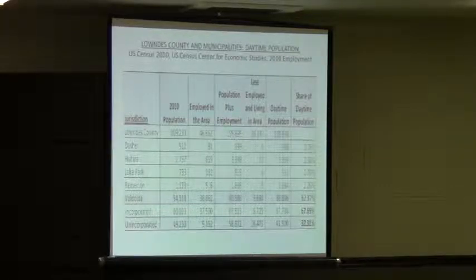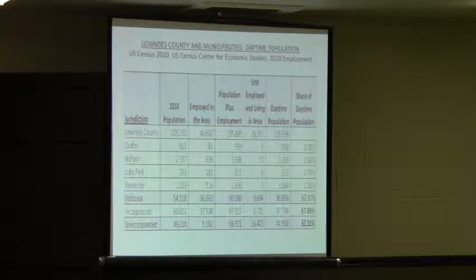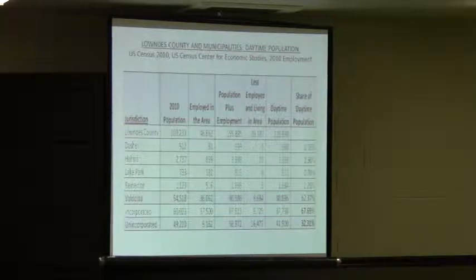Using census data, you take the population that lives inside a given community. The census has a way of measuring, based on their survey forms, where people work — whether you work in that same jurisdiction or elsewhere within the same county or a neighboring county within your commuting distance. So that can be measured, along with the destination of where people work.